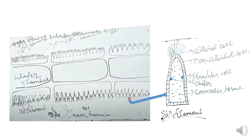If you see the detailed structure of each filament, the structure has ciliated cells, just below which we have non-ciliated cells, and just below this we have glandular cells. Within this portion we have connective tissue containing a pair of chitin. This is the detailed structure of each filament — every filament has all these parts.